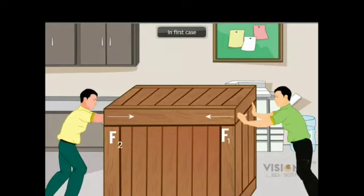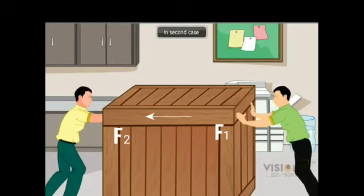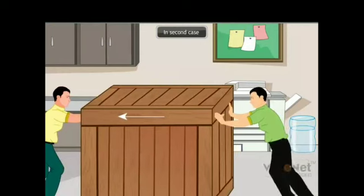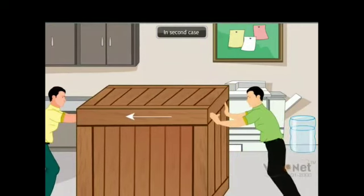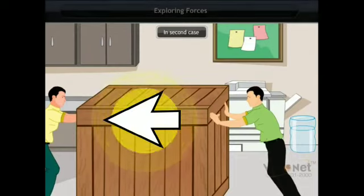Now in this case you can see that F1 is greater than F2 and as a result the object is moving along the direction of F1 because the effective force is along F1. So we can conclude that if more than one force is acting on an object and if the forces are acting in opposite direction, the effective force will be their difference.